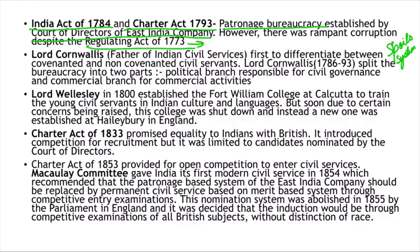Finally, Lord Cornwallis arrived, and he is called the father of Indian civil services. He created a very important distinction: a civil governance branch (the political branch for normal governance), a commercial branch related to EIC's commercial activities, a covenanted branch based on agreement with the state — which is why they are called covenanted services — and the non-covenanted branch for other purposes.